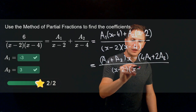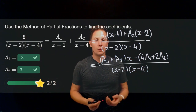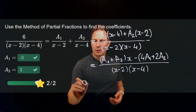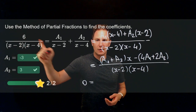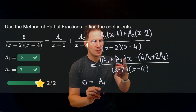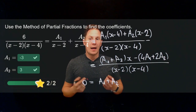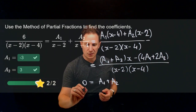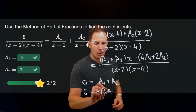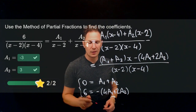Expanding gives (a1 plus a2) times x for the linear term, and (negative 4a1 plus 2a2) for the constant term in the numerator. The coefficients of powers of x must match on both sides for this to hold for all x. So the coefficient of x on the left is 0, giving a1 plus a2 equals 0, and the constant coefficient gives negative 4a1 plus 2a2 equals 6. This is a system of linear equations for a1 and a2.